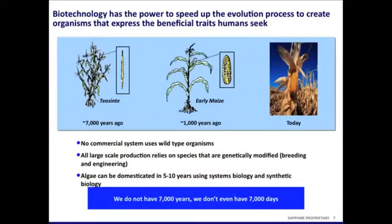Let's learn a little bit about what is modern agriculture. Here's a great example. This is corn. Corn is one of the most prolific crops that we have today, but maybe people don't understand its history.